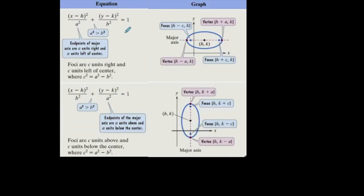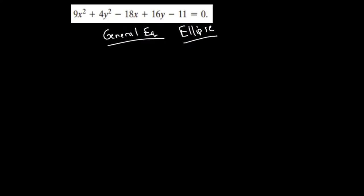We're going to have to complete the square twice. Let's group our x terms together: 9x squared minus 18x. Group our y terms together and bring the constant to the right, so I added 11 to move that to the right hand side.